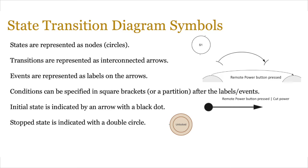The initial state where everything starts from is often indicated by an arrow with a black dot, telling you to start at that particular point. A stop state where you end is normally a circle within a circle — a double circle. On a diagram, if you see that, it's your end state, and you can have one or multiple end states in a state transition diagram.